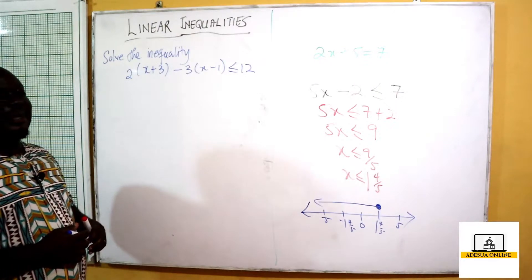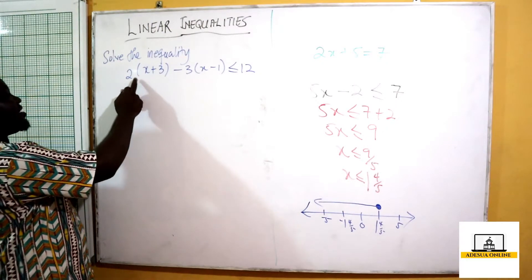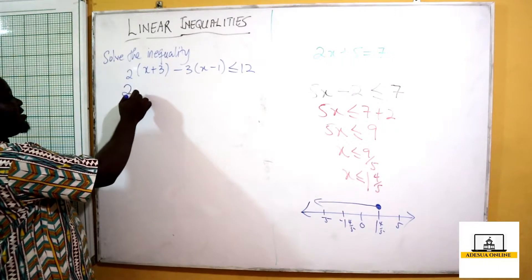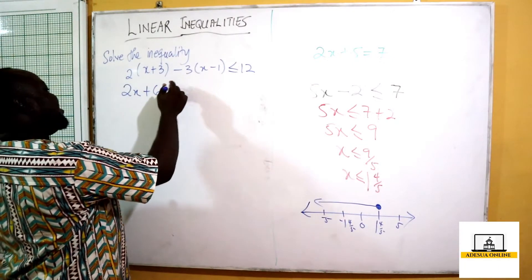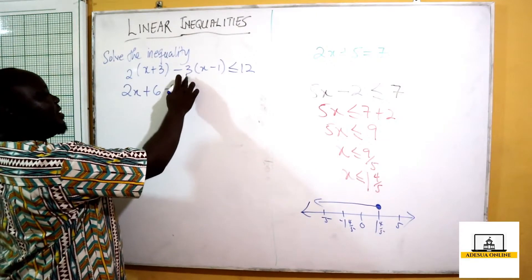We have 2 times x to be 2x, and 2 times 3 to be positive 6. Minus 3 times x is minus 3x, and minus 3 times negative 1 is positive 3. This is less than or equal to 12.